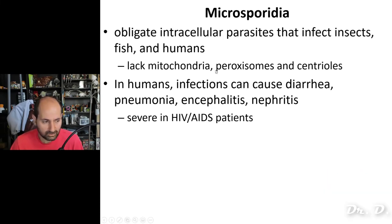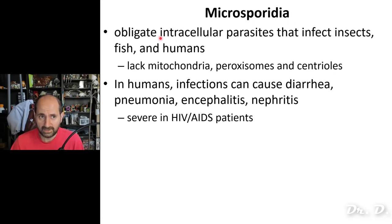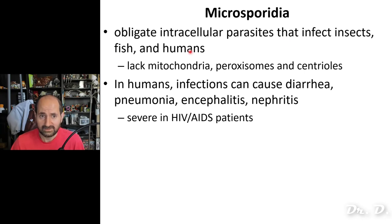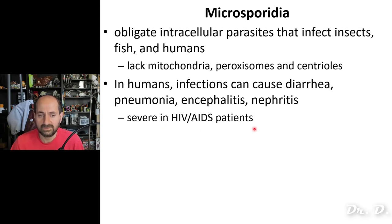The Microsporidia are probably the most unique of the fungi. They are obligate intracellular parasites that infect insects, fish, and humans. They are responsible for human infections including diarrhea, pneumonia, encephalitis, and nephritis — especially in humans with a compromised immune system, such as HIV and AIDS patients.